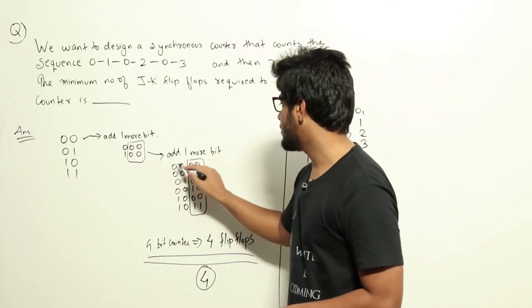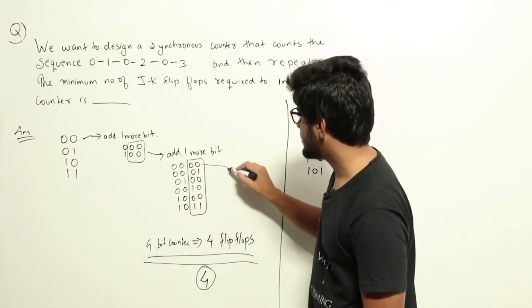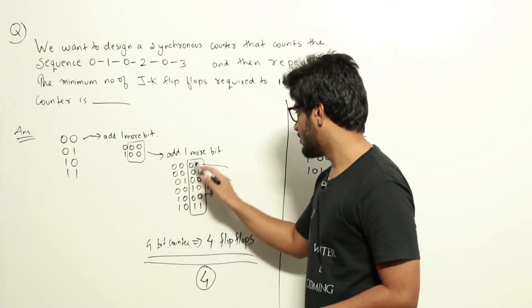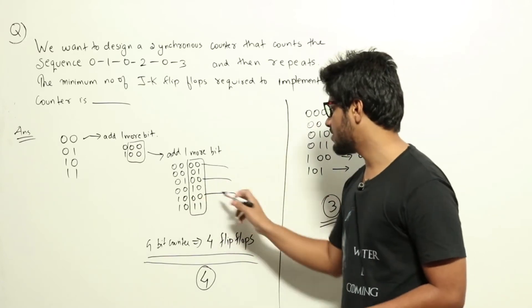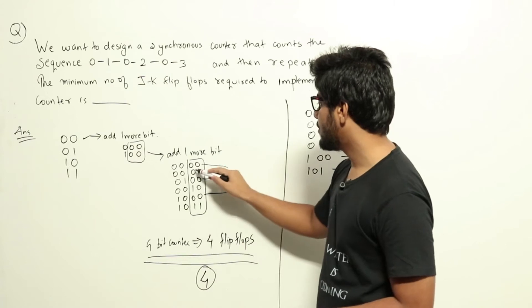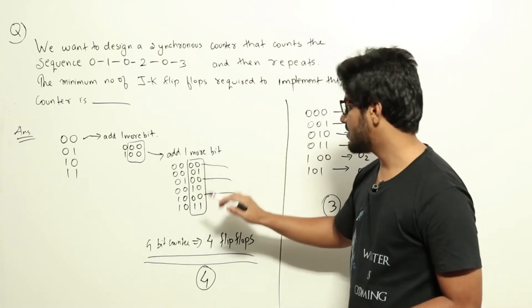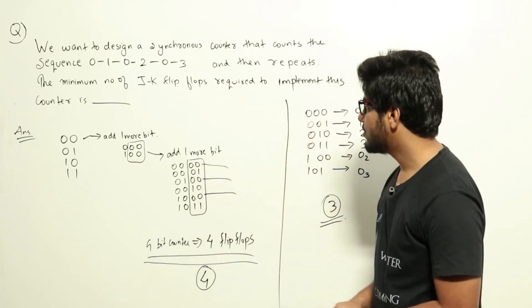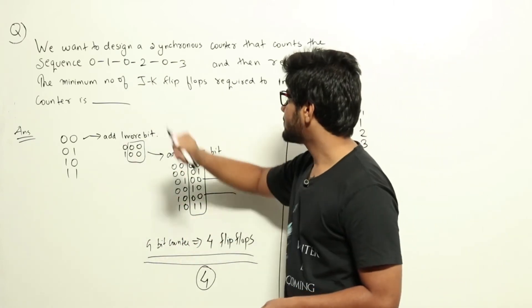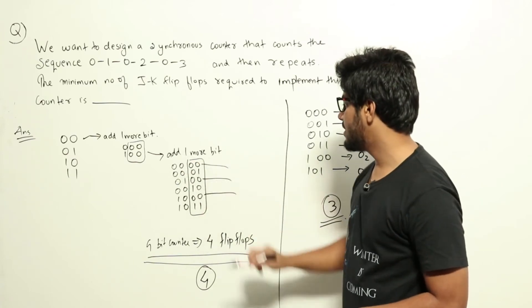Adding two bits gives us four possible states for 0. We assign: 0000 for the first 0, 0001 for the second 0, 0010 for the third 0, and keep 0101, 0110, 0111 for 1, 2, and 3. Looking at the two least significant bits of this counter, it displays 0, 1, 0, 2, 0, 3 in a loop — exactly the required sequence. This counter has four bits total, so it requires four flip-flops.